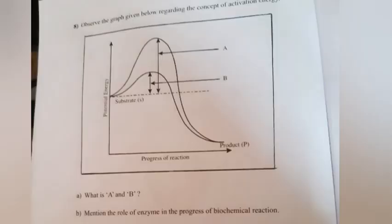Question 8: Observe the graph given below regarding the concept of activation energy. A. What is A and B? B. Mention the role of enzyme in the progress of biochemical reaction. Answer: A. A = Activation energy without enzyme; B = Activation energy with enzyme. B. Enzymes lower the activation energy and increase the rate of reaction.